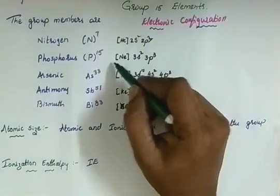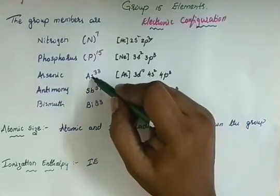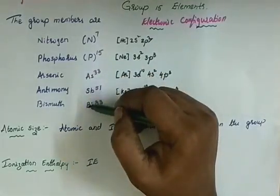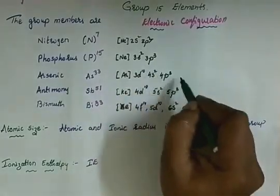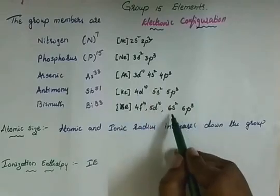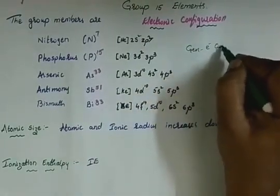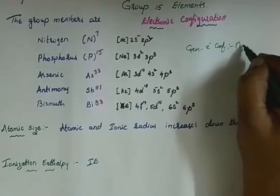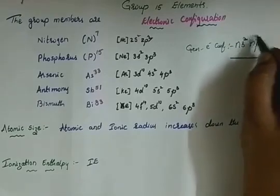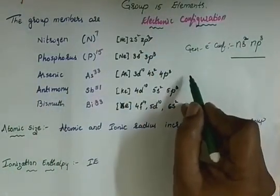For arsenic, after the [Ar] core we have 3d10, 4s2, 4p3. Then antimony: 5s2, 5p3. And bismuth: 6s2, 6p3. In all of these, the common general electronic configuration is ns2, np3 — because of these 2 electrons and 3 electrons making 5, they belong to the 15th group element.